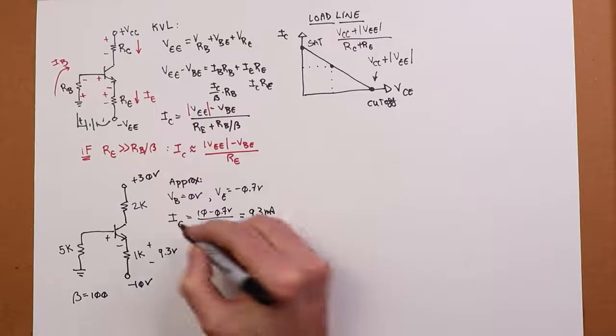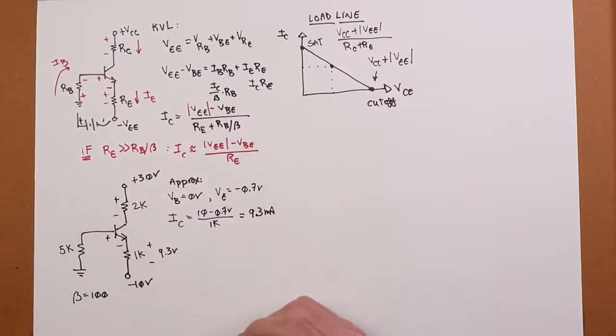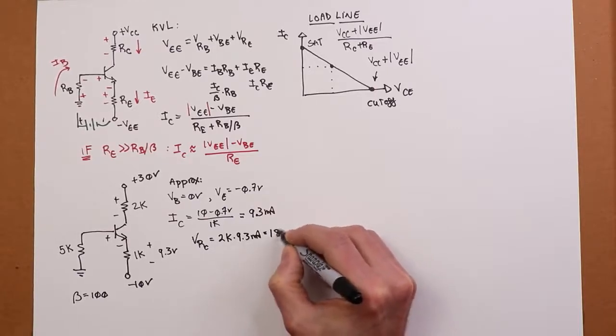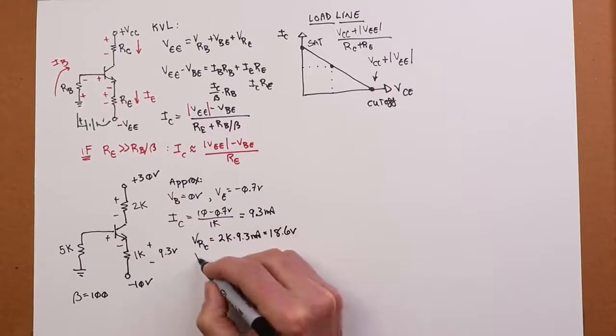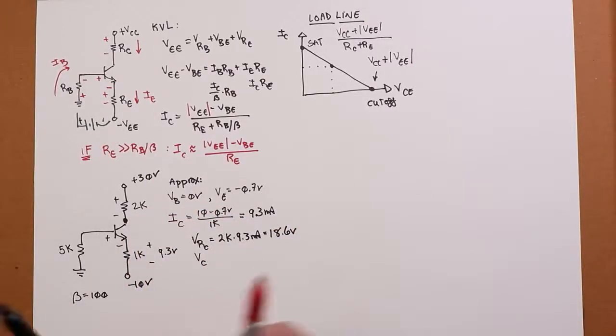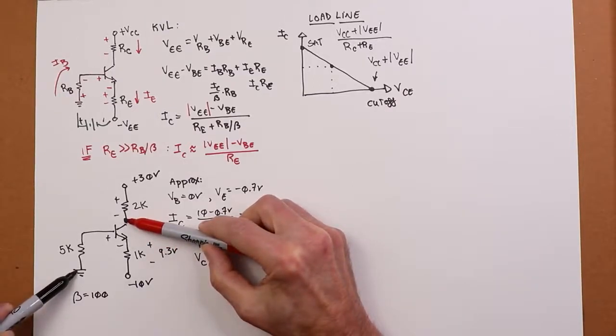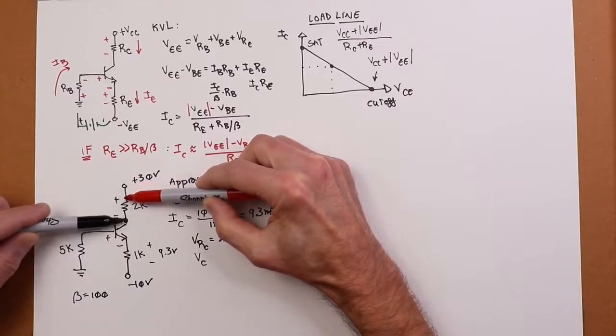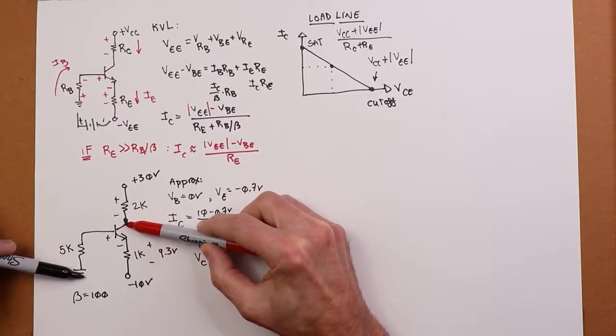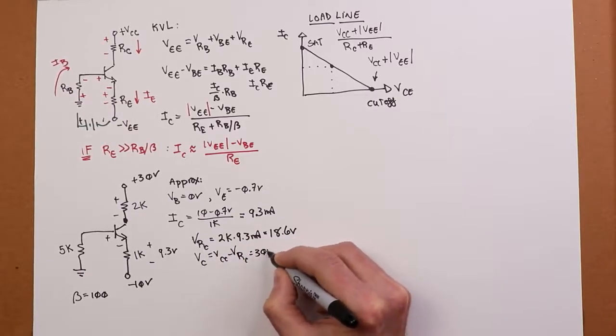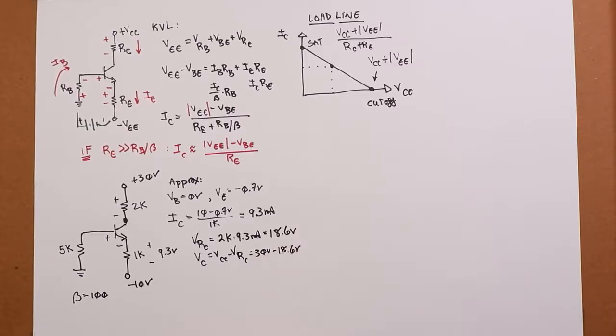Now once I know that current, I can come back here and find the drop across the 2k. The voltage across the collector resistor is going to equal 2k times the current, which will get us 18.6 volts. And I can now determine the collector voltage. Remember, don't confuse V of RC and VC. VC, here's the collector. If you had your meters, had a DMM, you're going to put red lead on the collector, black lead on ground. That's VC. V of RC is this, the drop across the resistor. So here's our total VCC. Take this, subtract it from this, and what you're left is this. So VC equals VCC minus V of RC. That's going to be 30 volts minus the 18.6 we just found. That's 11.4 volts.